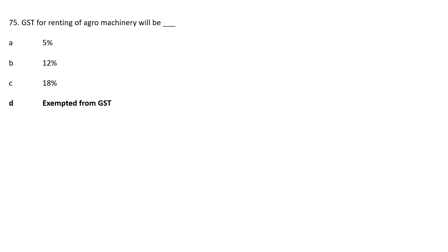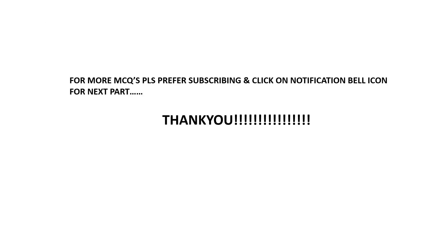Question 75: GST for renting of agromachinery will be — Option A: 5%; Option B: 12%; Option C: 18%; Option D: Exempt from GST. The GST for renting agromachinery will be exempt from GST. For more MCQs, please subscribe and click on the notification bell icon for the next part. Thank you.